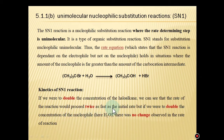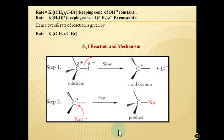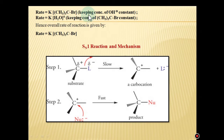If we were to double the concentration of tert-butyl bromide, the reaction would proceed twice as fast as the initial rate. But if we were to double the concentration of nucleophile, here water, there was no change observed in the rate of reaction. Hence the rate law given is: rate is equal to k times the concentration of tert-butyl bromide to the first order.